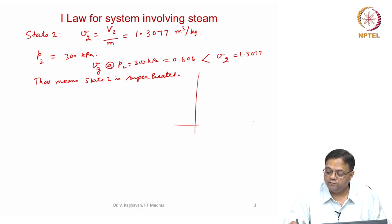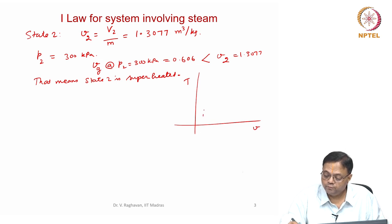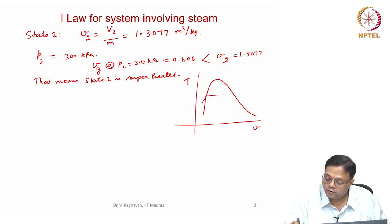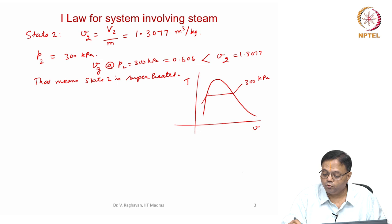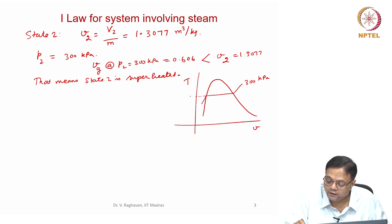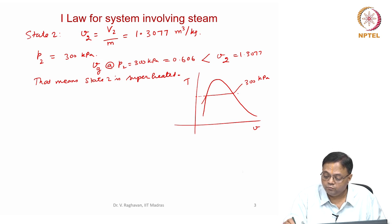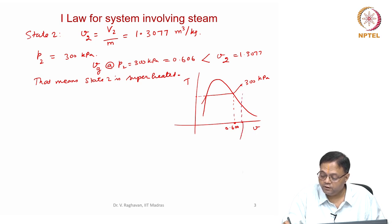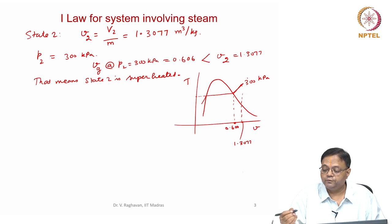In a T-v diagram, on the 300 kilopascal isobar, Vg is 0.606 but the required volume is 1.3077 — which is to the right of the saturation dome — confirming the superheated state.